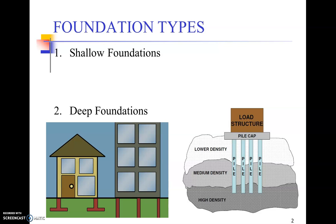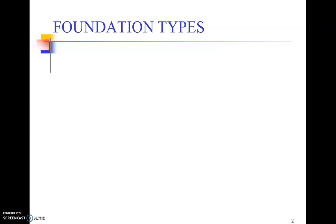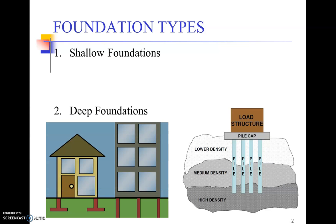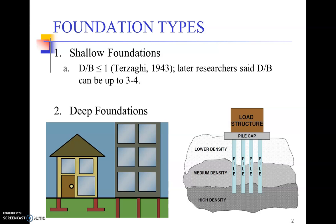Before we go towards the topic of understanding settlements, we must get familiarized with the types of foundations available. There are basically two major types of foundations. One is the shallow foundation, which is generally laid closer to the natural surface level and bears a depth-to-width ratio less than or equal to one according to Terzaghi's criteria. Some foundations with a D/B ratio ranging up to 3 to 4 can also be considered shallow, especially when dealing with structures having basements.